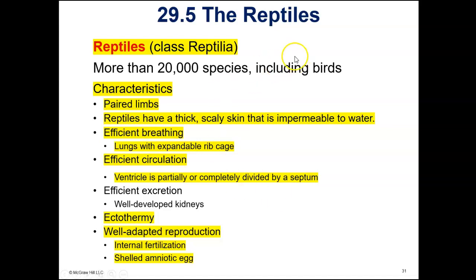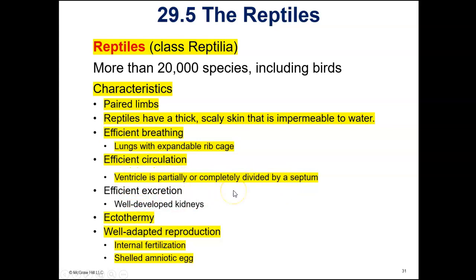Now we're going to move on to the reptiles, which are class Reptilia. They have paired limbs and thick scaly skin that is impermeable to water. They have efficient lungs, so they don't supplement their breathing through their skin. They have efficient circulation and one ventricle, which is partially or completely divided by a septum.